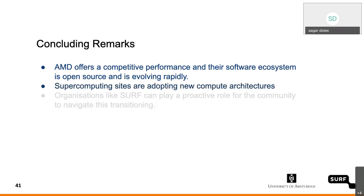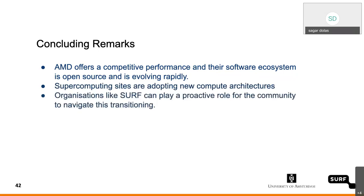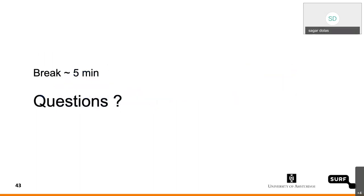Supercomputing sites are experimenting and adopting new compute architectures, and therefore scientific computing codes have to adopt as well. People who facilitate researchers have to keep in mind that in the near future, scientific computing codes will need to be changed to run on these machines. Organizations like SURF can play a very proactive role for the community to navigate this transition. That's why we're conducting these webinars and in the future we will be able to help researchers access machines like these.